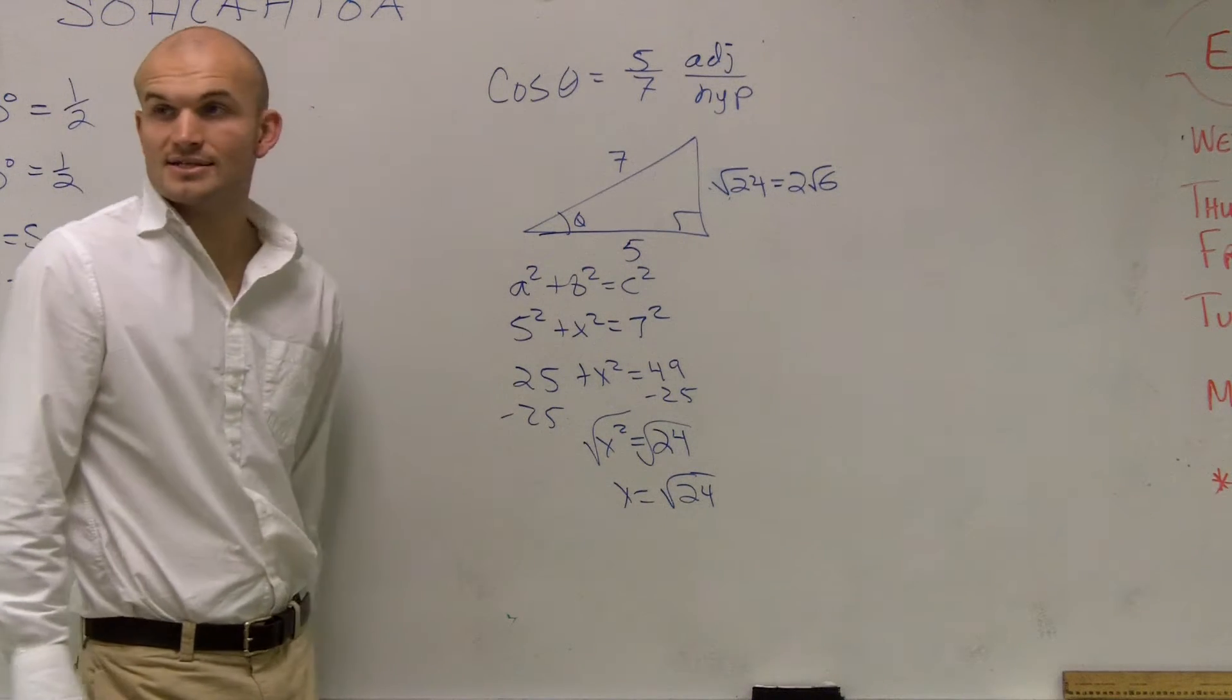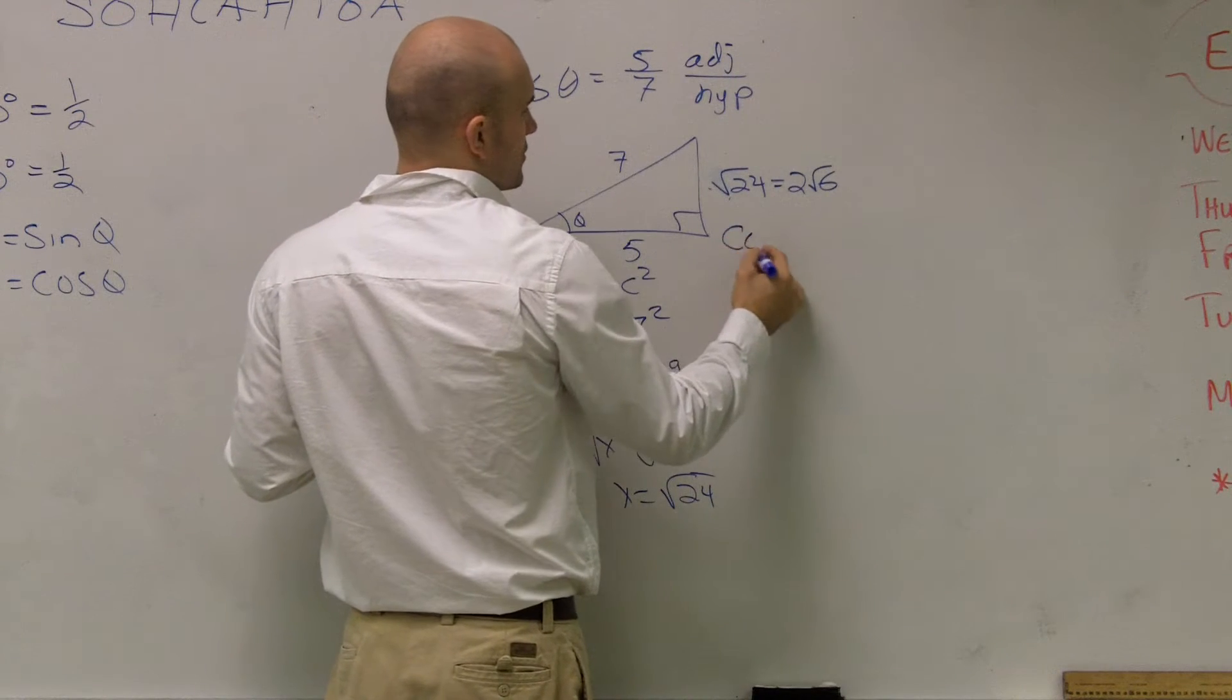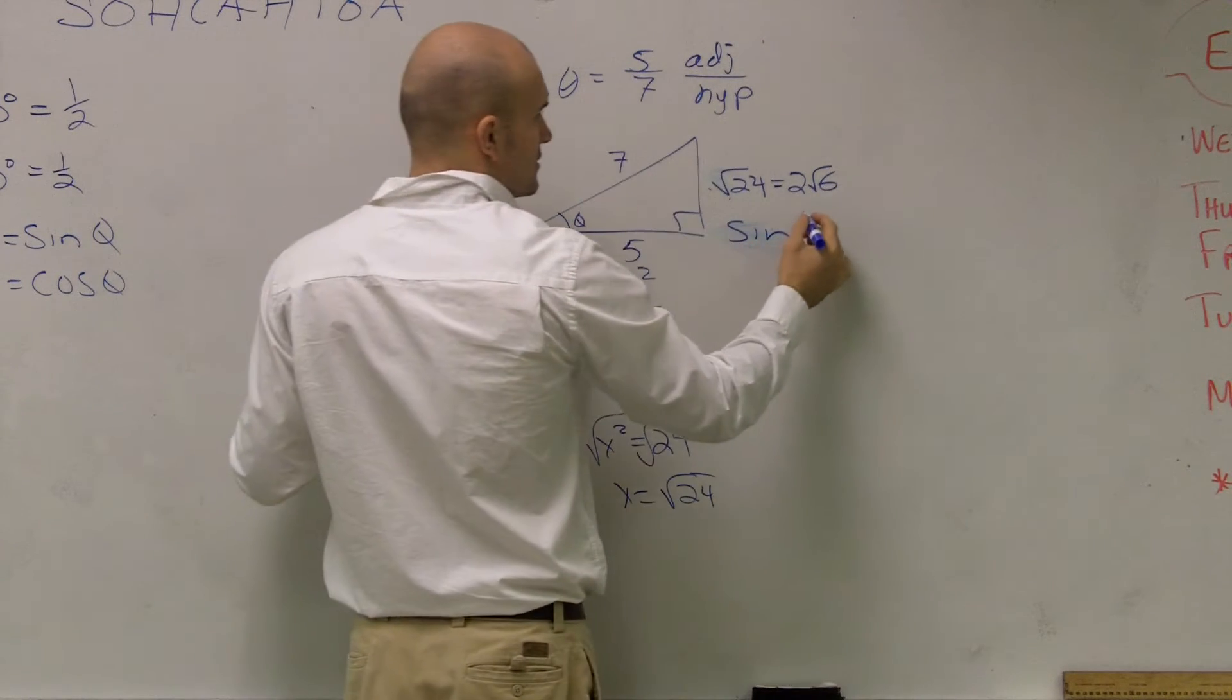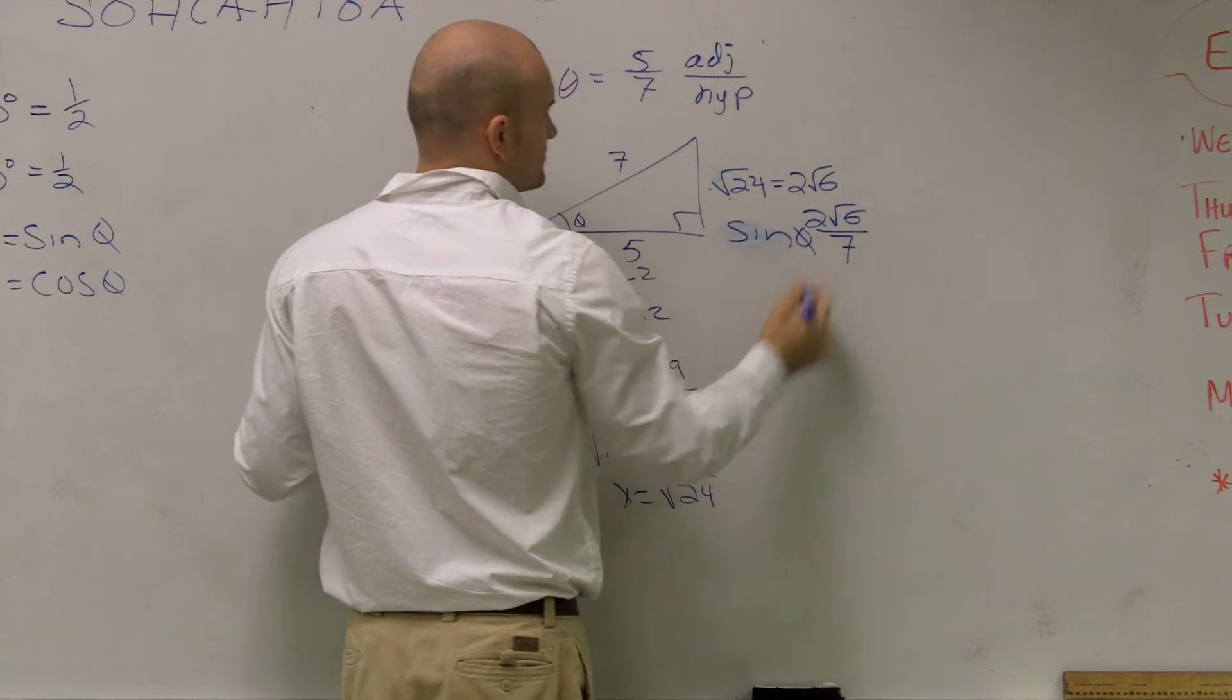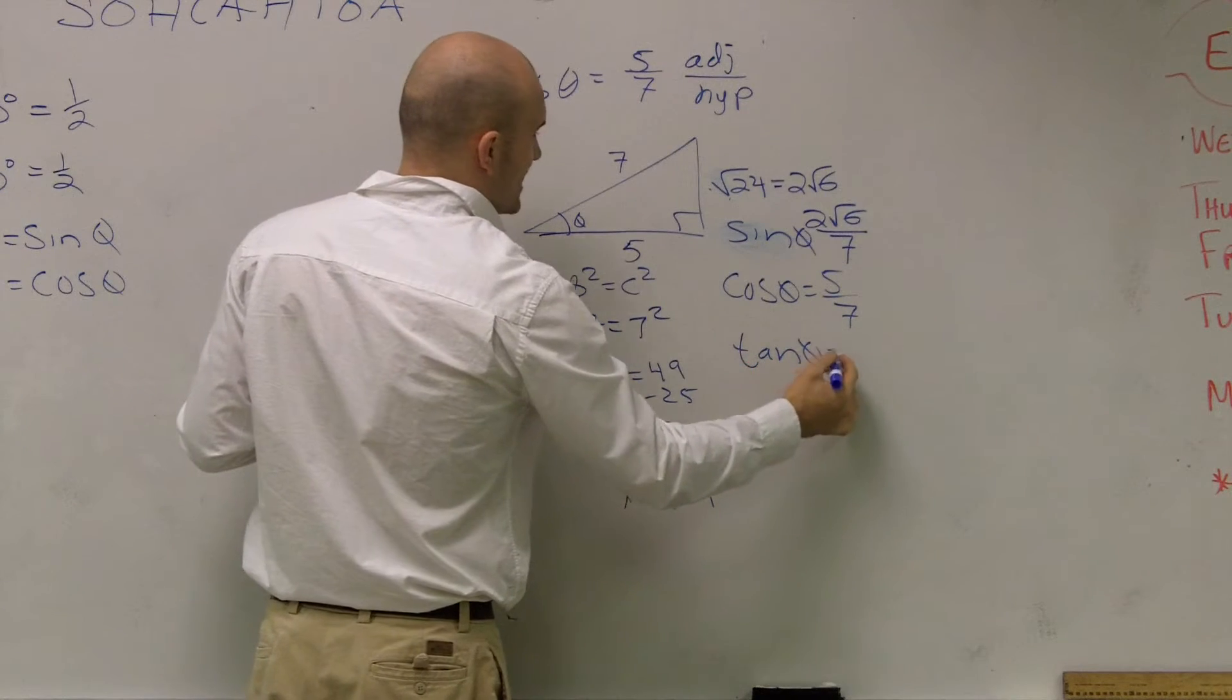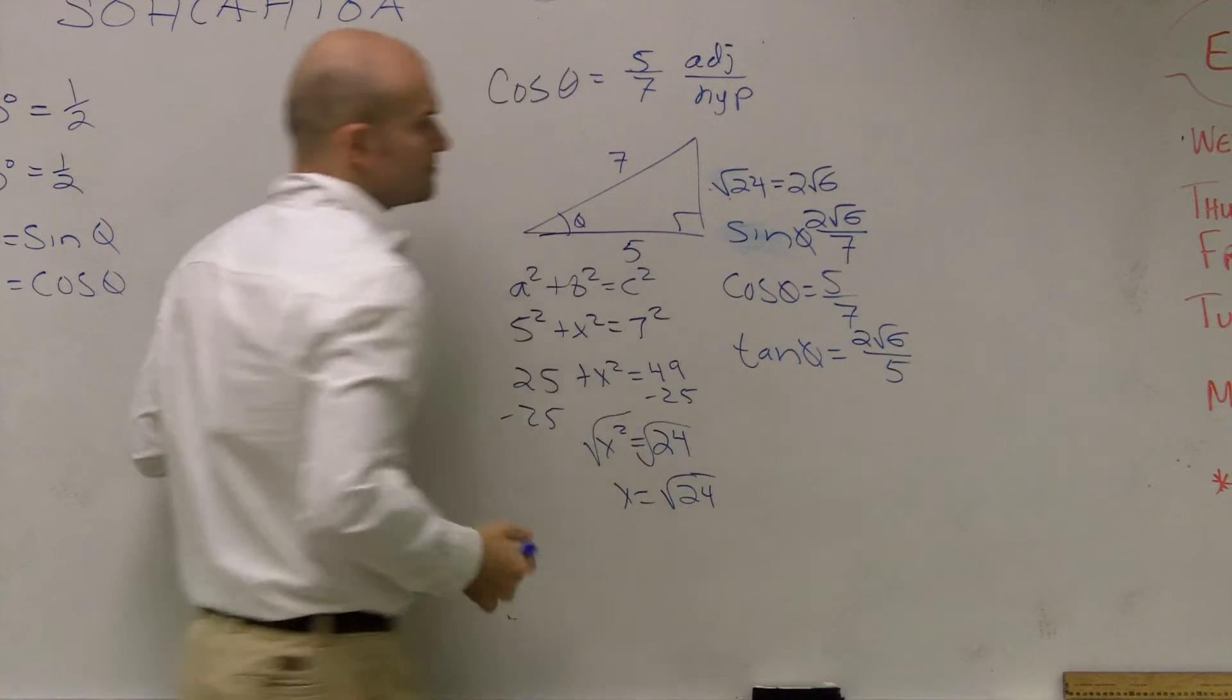All right. So now, it asks us to find the six trigonometric functions. Well, cosine, they already gave us. So, if I know, let's just do this. Sine is opposite over hypotenuse. That's sine of theta. Cosine of theta equals 5 over 7. Tangent of theta is going to be your opposite over your adjacent, right? So it's 2 root 6 over 5.